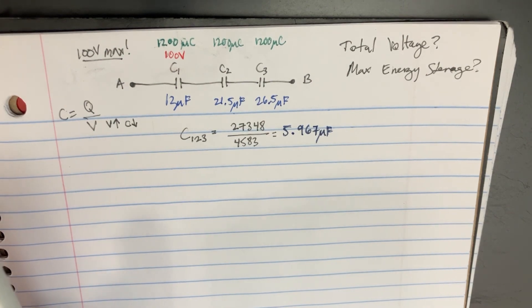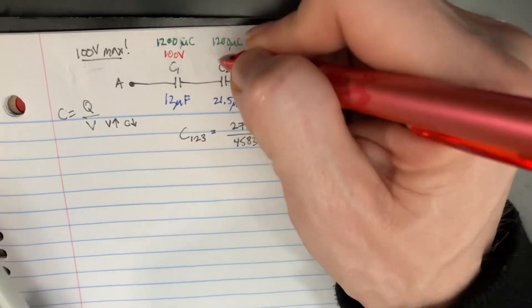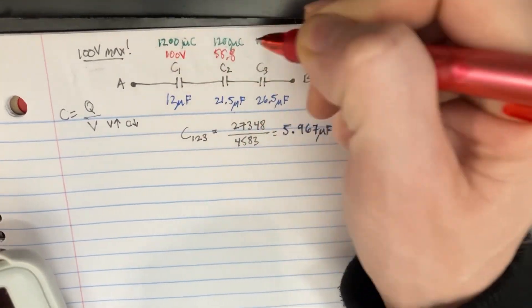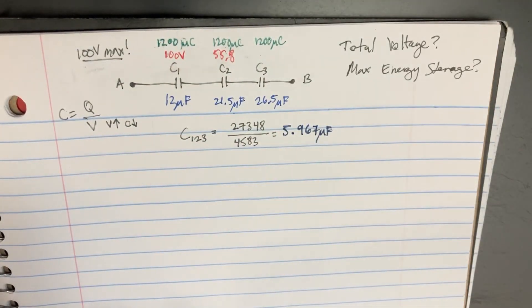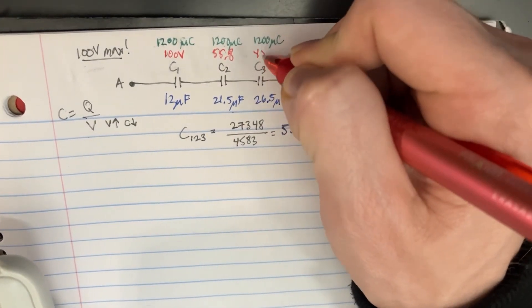1,200 by 21.5. And here we get the voltage of 55.8. And then here we're going to get 1,200 divided by 26.5, giving us a voltage of 45.3.